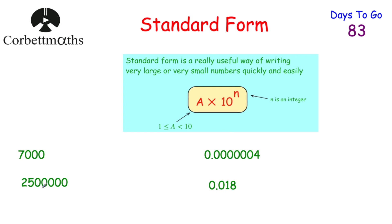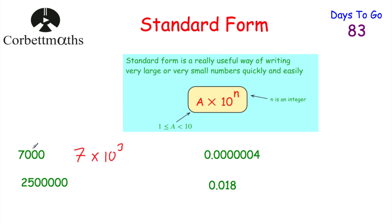Here we've got some numbers and I'm going to show you how to write large and small numbers in Standard Form. Starting with 7,000: we need a number between 1 and 10, so we choose 7, then multiply by 10 to some power. 7 × 10 = 70, 7 × 10² = 700, 7 × 10³ = 7,000. So 7,000 in Standard Form is 7 × 10³. The 7 needs to move 3 columns to the left, so we multiply by 10 three times.